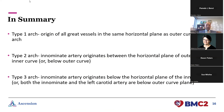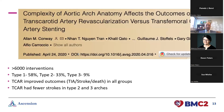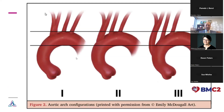To recap: a type one arch is where all the great vessels originate in the same horizontal plane. Type two is where the innominate artery drops below. Type three is where the innominate artery and the left carotid are both below the outer curve. There's no single standard classification system — when I was a fellow, I learned to just draw one line straight across: all in the same plane is type one, one below is type two, more than one below is type three. It's a crude but practical way to classify arch types and guide treatment strategies.